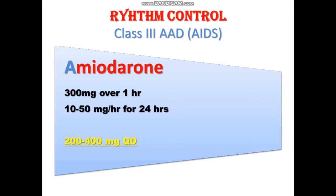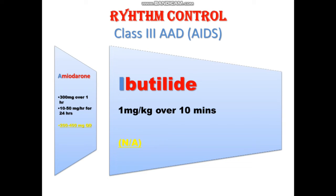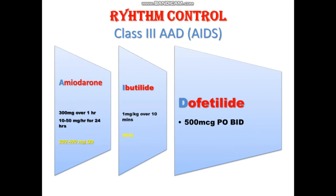First, amiodarone: the loading dose is 300 mg over 1 hour, then 10 to 50 mg per hour for 24 hours to convert the patient to sinus rhythm. The maintenance dose is 200 to 300 mg once daily. Next is ibutilide: the dose for converting to sinus rhythm is 1 mg per kg given over 10 minutes. It can be repeated once. There is no maintenance dose for ibutilide.